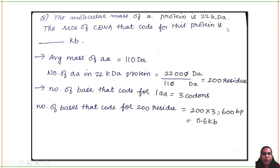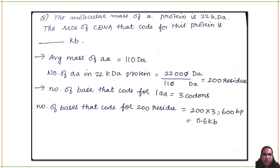Sixteenth question: the molecular mass of a protein is 22 kDa. What is the size of the cDNA that codes for this protein? Average mass of one amino acid = 110 Da. Number of amino acids = 22,000/110 = 200. Each amino acid requires 3 codons (base pairs), so 200 × 3 = 600 base pairs = 0.6 kilobases.